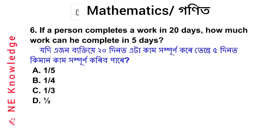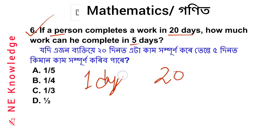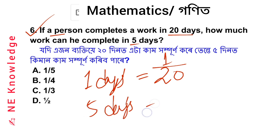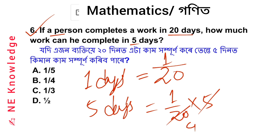Question number 6: A person completes a work in 20 days. How much work can he complete in 5 days? One day's work is 1/20. So in 5 days, he completes 5 × (1/20) = 5/20 = 1/4. Option number B is correct.